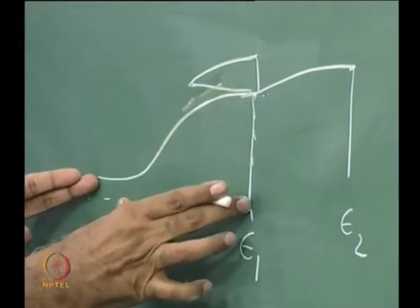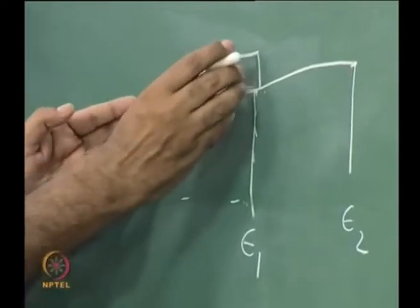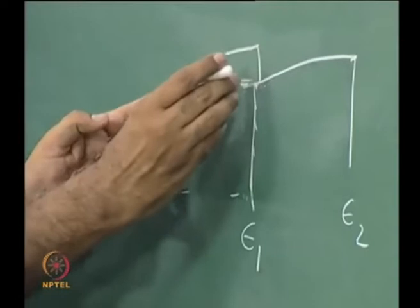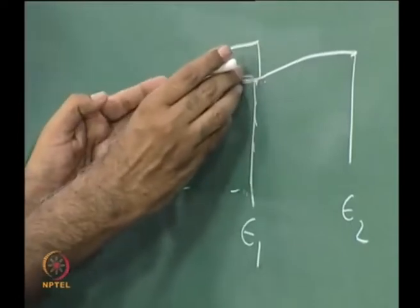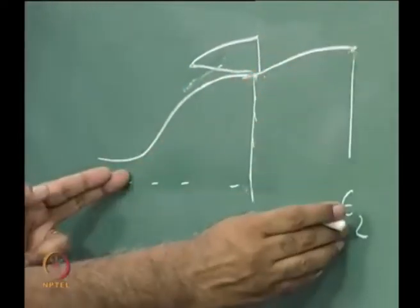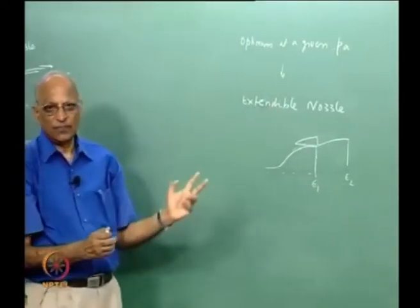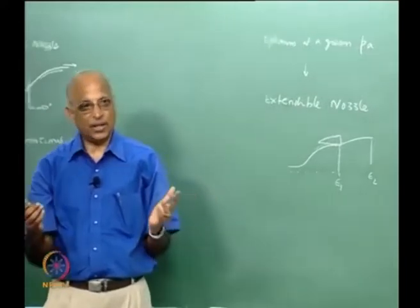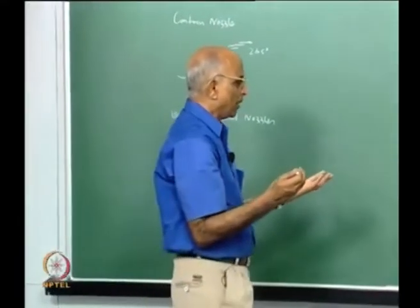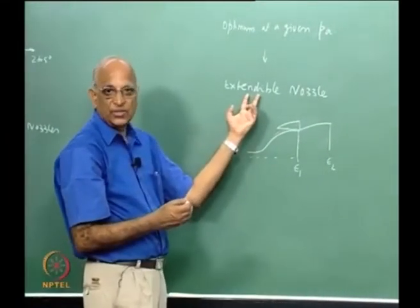During lower altitude I use a smaller area ratio nozzle, storing the extension on top. When it reaches a particular altitude, I push it out. This corresponds to moving from area ratio ε₁ to a larger area ratio ε₂. This is what we call an extendable nozzle. It was tried in a flight but is not used extensively.